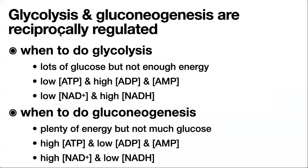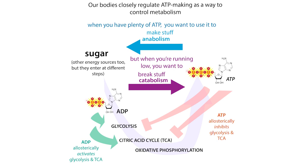When would we want to do glycolysis? If there's lots of glucose but not enough energy. How do we know if there's not enough energy? We would have low concentrations of ATP and high concentrations of ADP and AMP. AMP is a more sensitive indicator of energy levels than ADP because we can take two ADPs and convert them into ATP and AMP. The ATP-to-AMP ratio is a better indicator. Both ADP and AMP are going to be allosteric regulators — they can bind to enzymes and alter their activity.